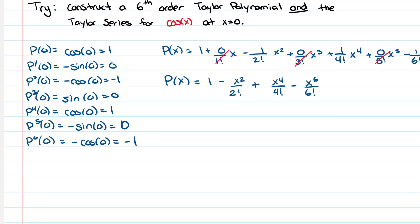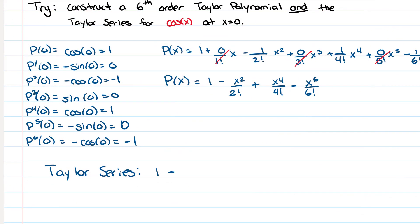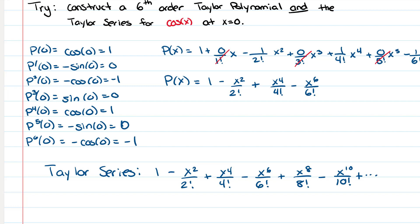Now I write the Taylor series — extending that same polynomial pattern: 1 − x²/2! + x⁴/4! − x⁶/6! + x⁸/8! − x¹⁰/10! and so on. As soon as you see the pattern, you can go ahead and write the series.